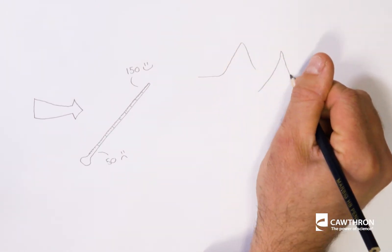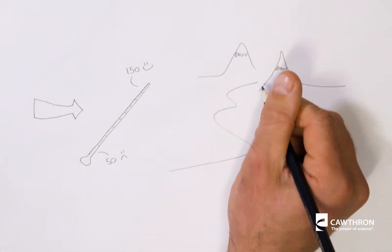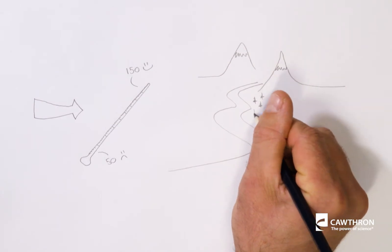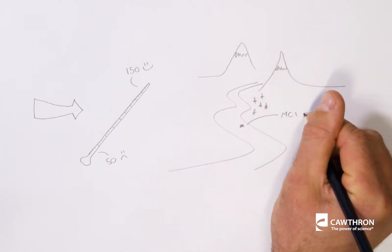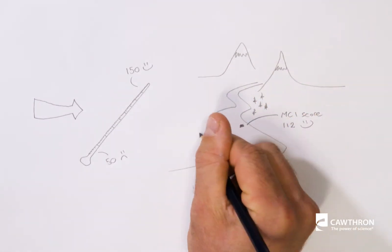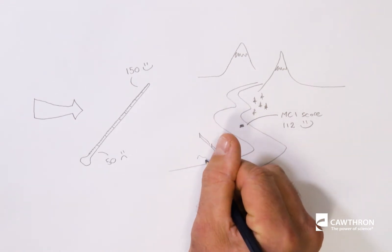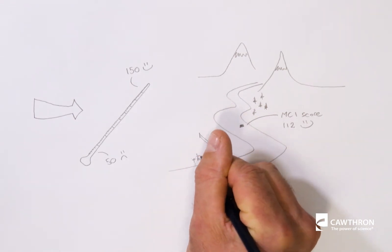Because stream bugs live for a year or two, they are like a black box recorder for water quality. As it turns out, the MCI is also a pretty good indicator of overall stream health, because the same bugs that don't tolerate enrichment also tend not to tolerate other pollutants like fine sediment.